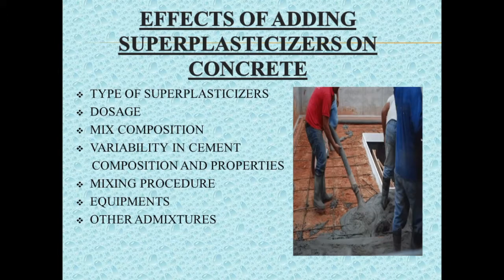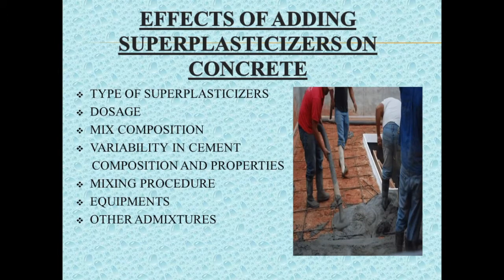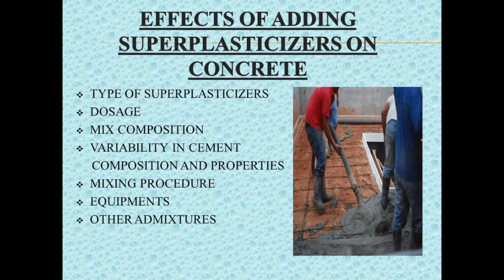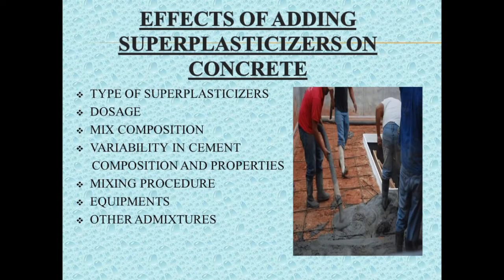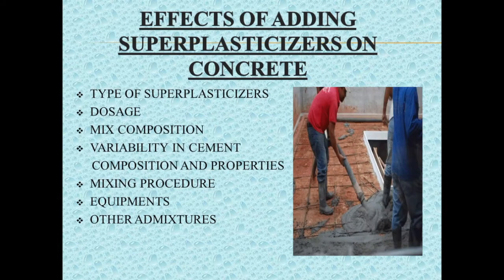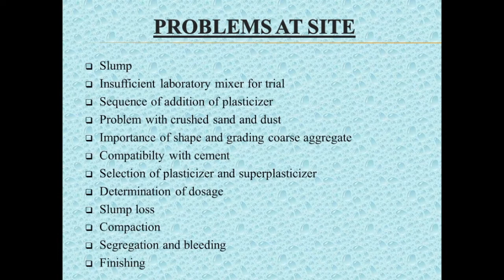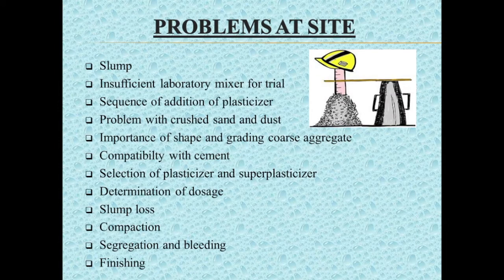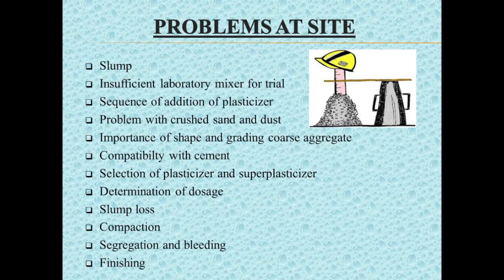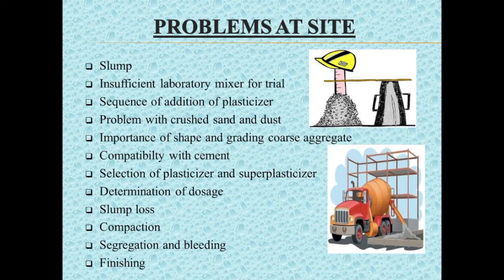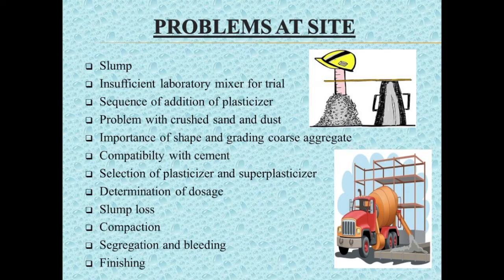There are many other problems faced at the site due to the addition of superplasticizers. When a concrete pump and placer boom are used for placing concrete, the slump requirement is around 100 mm. Suppose 100 mm slump concrete is used for a roof slab casting — such a high slump, which is undesirable for roof casting, causes problems of segregation and bleeding.